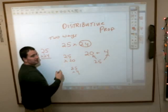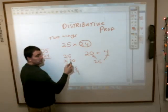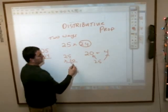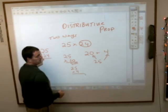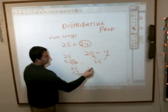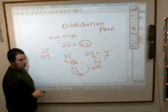Okay, well 25 times 20, you might be able to do it in your head. What's 25 times 2? 50 plus another zero, so this is 500. What's 25 times 4? If you have 4 quarters, it's 100. 100 plus 500 is 600. And I guarantee you, if you multiply this out, that's the same thing you're going to get.